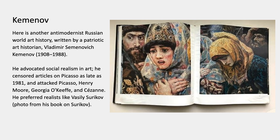Before the second example from Turkey, here's another anti-modernist Russian world art history, written by a single art historian named Kemenov. He advocated social realism, the official art style, and censored articles on Picasso as late as 1981 — keeping those articles out of official journals. He wrote negatively about Picasso, Henry Moore, Georgia O'Keeffe, and Cézanne.